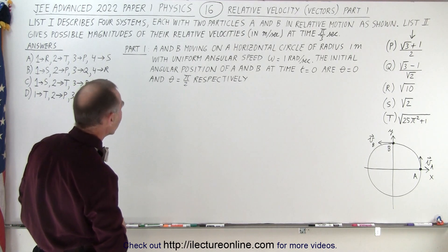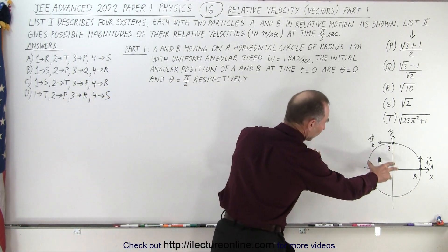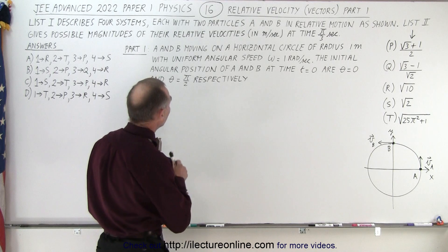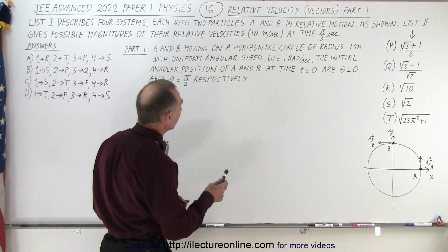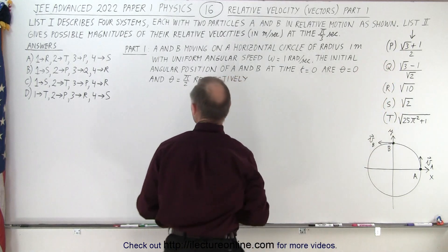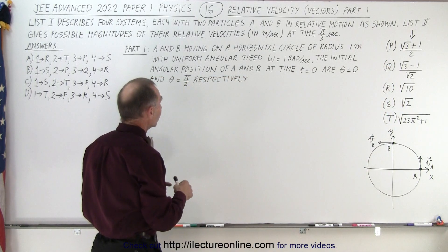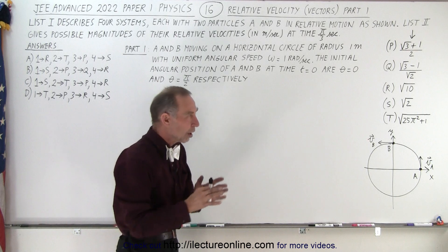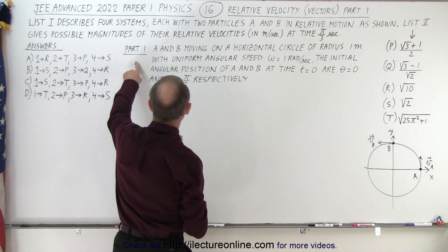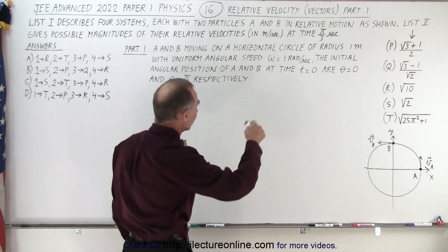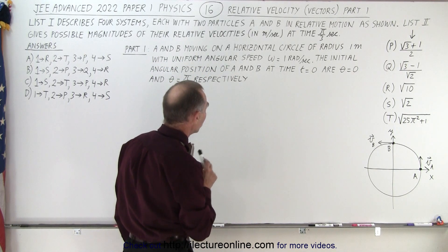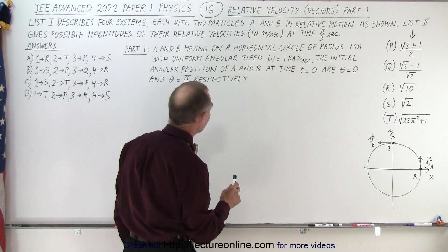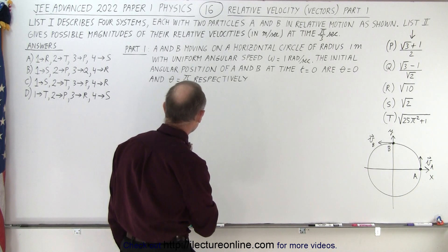List one describes four systems each with two particles A and B in relative motion. List two gives possible magnitudes of their relative velocities in meters per second at time π/3 seconds. Part one says A and B are moving on a horizontal circle of radius 1 meter with uniform angular speed ω = 1 radian per second. The initial angular position of A and B at time t = 0 are θ = 0 and θ = π/2 respectively.